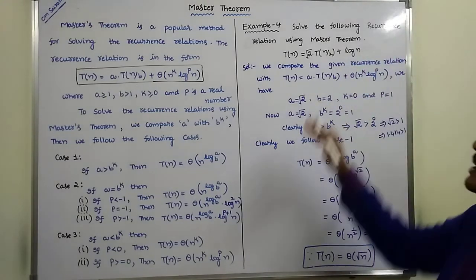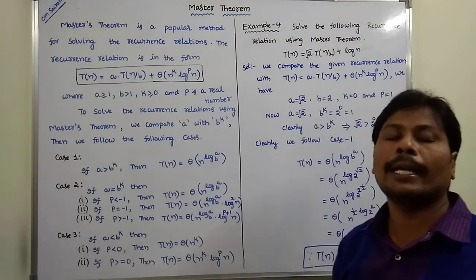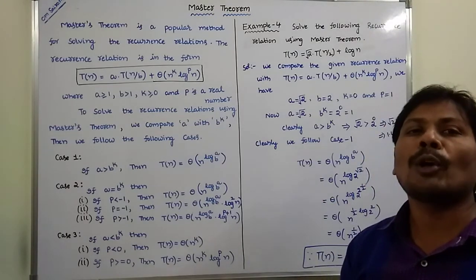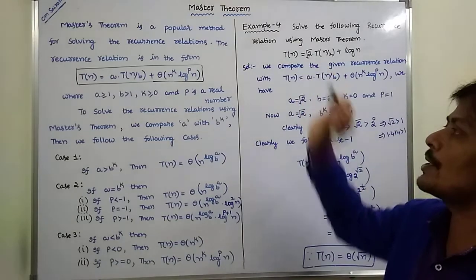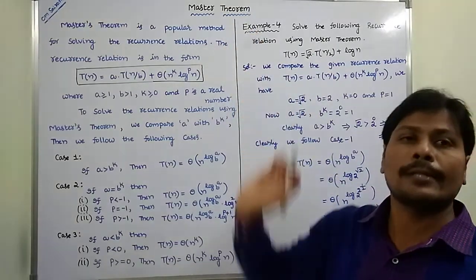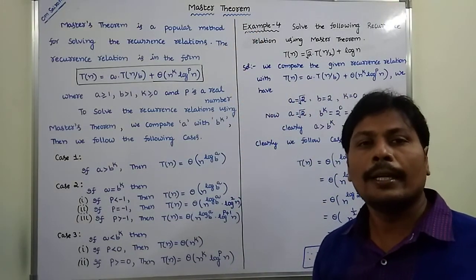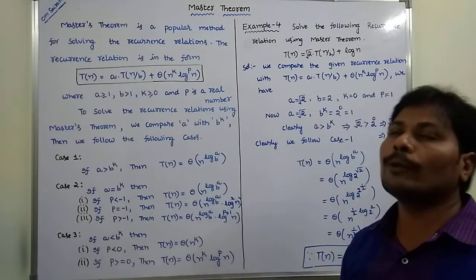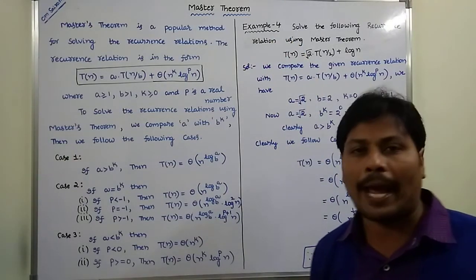In this way, we calculate the time complexity of a given recurrence relation using Master Theorem. Next, we go to Example 5.